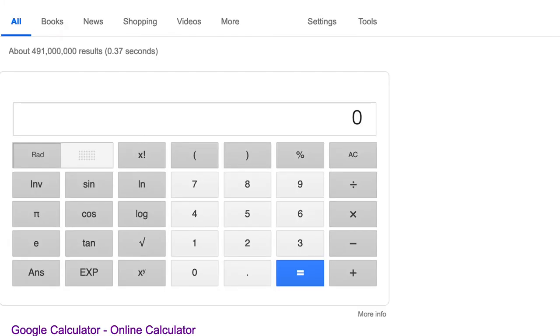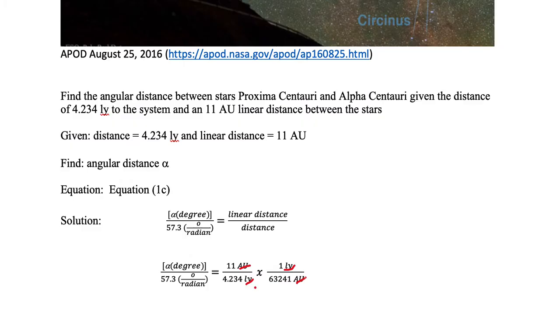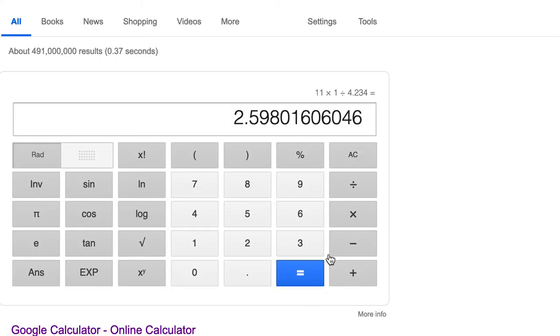Here's our Google calculator. The first step is 11 times 1, and then divide that by 4.234. Equals. Now we need to divide by 63241. So we divide this by 6, 3, 2, 4, 1, and hit the equal sign. And now we have this very small number.